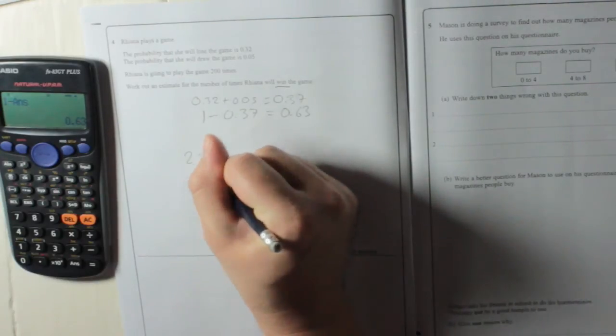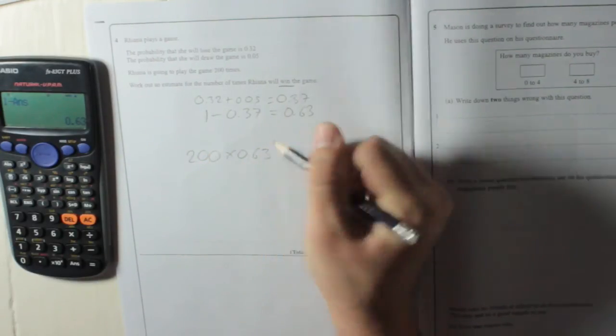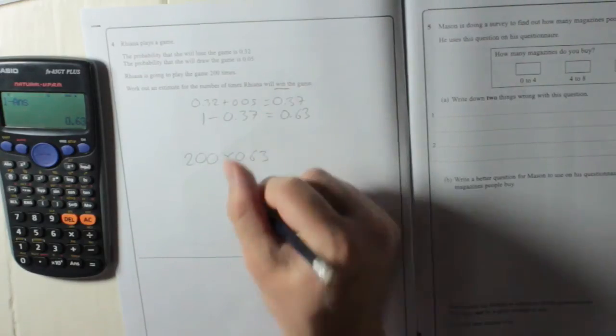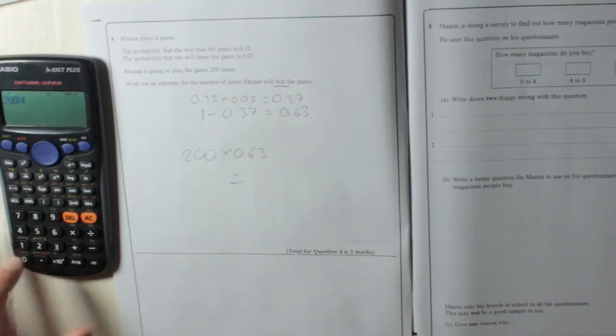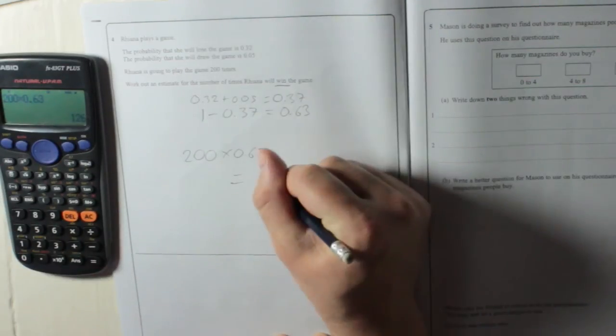So if we do 200 times 0.63, we will get the amount of times we expect her to win, which is 126.